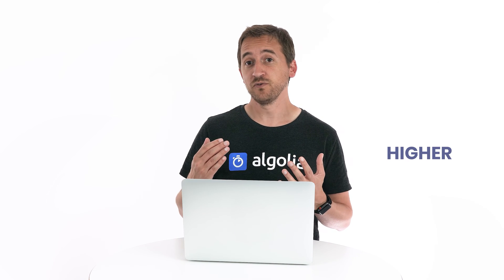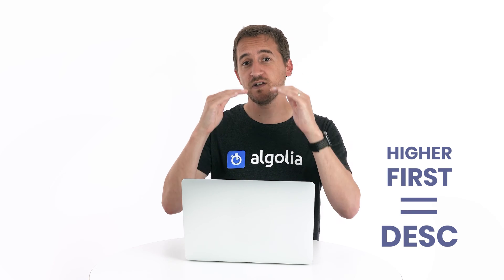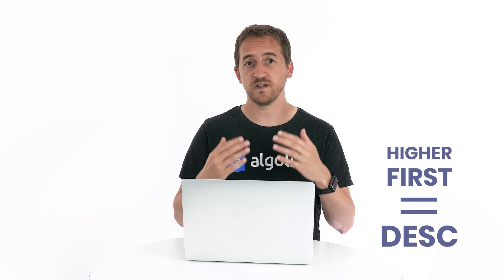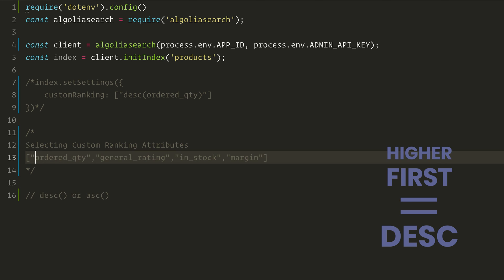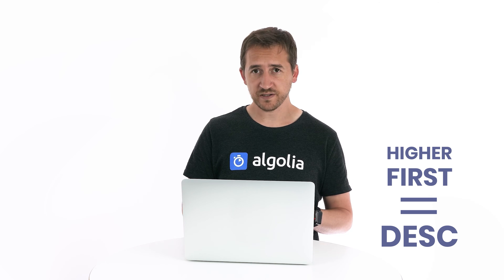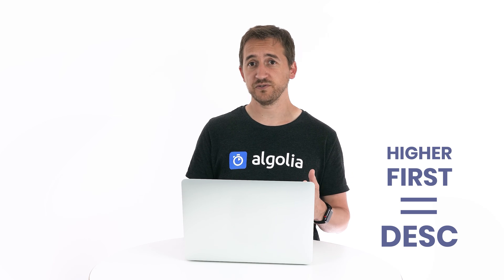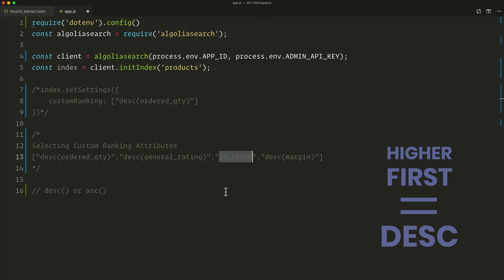The second step is to configure each attribute. If a higher value means a better ranking, set it as descending; otherwise set it as ascending. So going back to our data set: ordered quantity, general rating, and margin should all be set as descending because the higher the number, the better — and the syntax is as follows. For in stock, it's a boolean with two possible values, true or false, so to promote results that are still in stock we also set it as descending, and the syntax is actually the same.